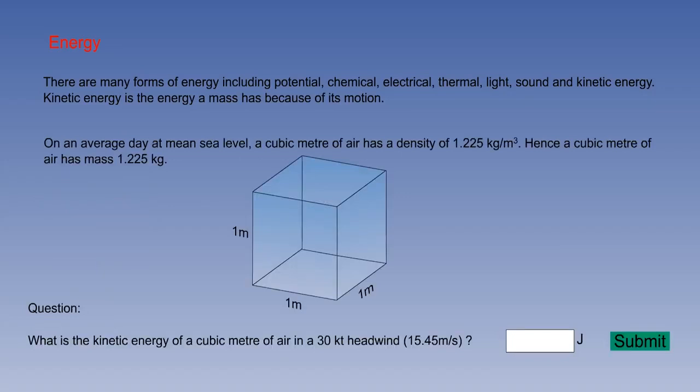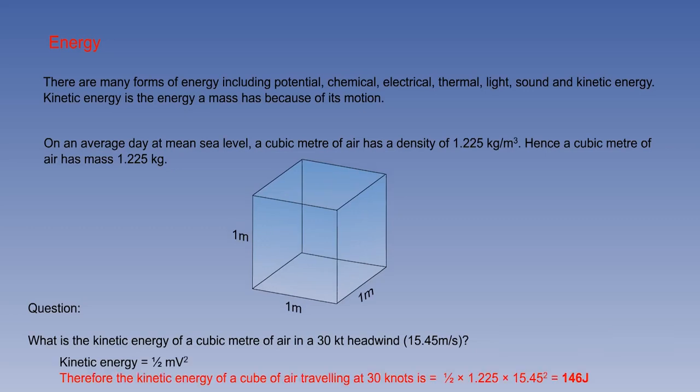Air density at mean sea level on an average day is 1.225 kilograms per cubic metre. Although we rarely think about it in our day to day lives, a cubic metre of air is therefore approximately 1.225 kilograms. This means that when air moves, or there is relative motion between it and an aeroplane, it has considerable kinetic energy. The kinetic energy is found by squaring the air's speed in metres per second by the mass of the cube of air, and then halving it.